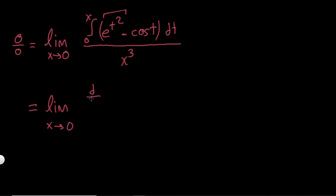So I have d over dx. And I will also show you what does it mean to differentiate an integral. E to the t squared minus cosine t dt. I am differentiating top part with respect to x and I should also do the same on bottom part. Well, the bottom part is trivial. Let's think about the top part.